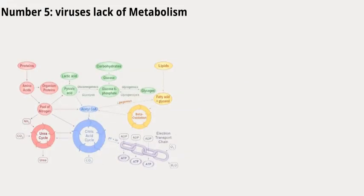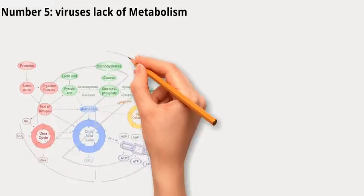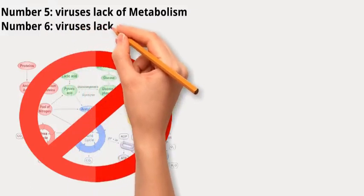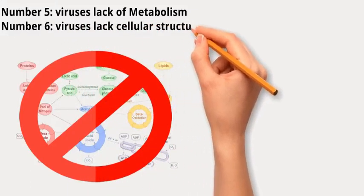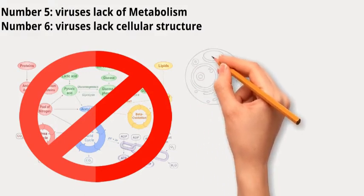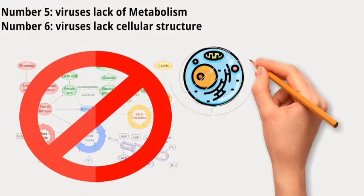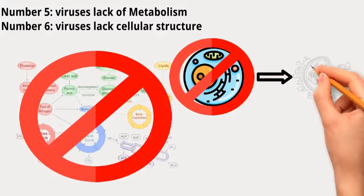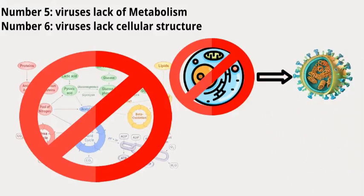Number five: viruses lack metabolism. Viruses do not have the metabolic machinery required for energy production or other metabolic processes. They cannot carry out functions like respiration, growth, or reproduction on their own. Number six: viruses lack cellular structure. Unlike cells, viruses lack organelles like mitochondria, nuclei, or a cell membrane. They are much simpler in structure, consisting mainly of genetic material in a protein coat.